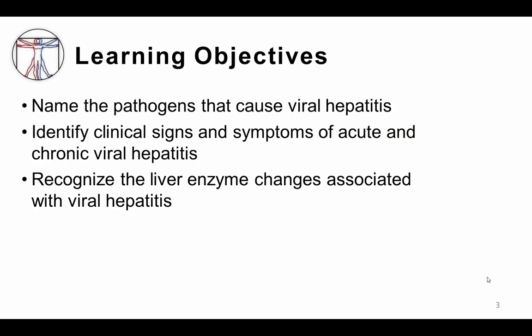Our learning objectives today include: number one, for you to be able to name the pathogens that cause viral hepatitis; number two, for you to be able to identify some of the clinical signs and symptoms of acute and chronic viral hepatitis; and finally, number three, to be able to recognize some of the liver enzyme changes associated with viral hepatitis infection.